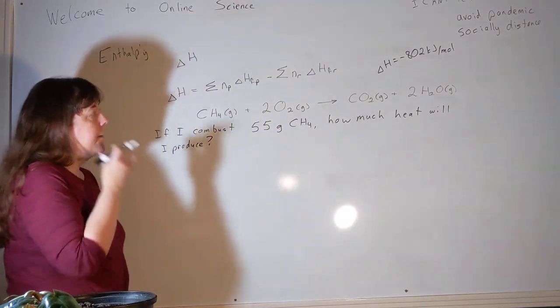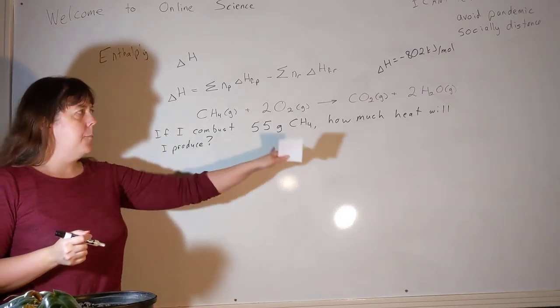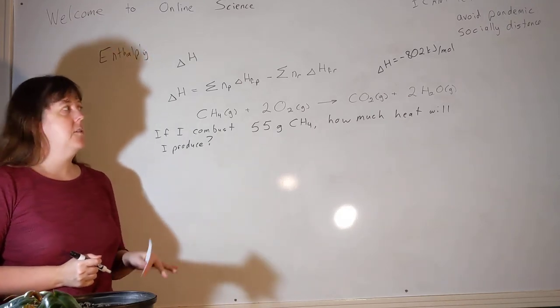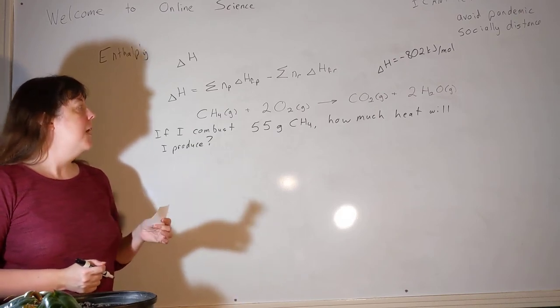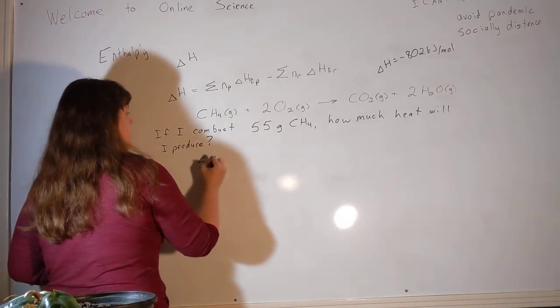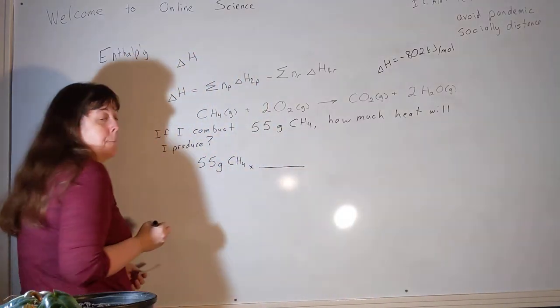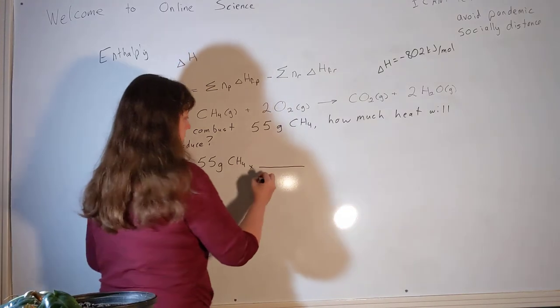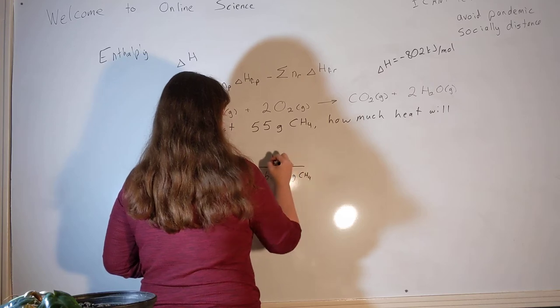Now I'm hoping the wording of that problem reminds you of something. I'm hoping what it reminds you of is a stoichiometry problem. If I combust this much of this, how much of this other thing will happen? Every stoichiometry problem we've worked so far has had two chemical substances. It turns out we can treat heat in much the same way that we treat the chemical substances when it comes to a stoichiometry problem. I'm just going to work this one and then we'll talk about how exactly I did it. I'm going to start with my 55 grams of methane. And the first thing I'm going to have to do if I'm given an amount in grams and a stoichiometry problem is convert it to moles. Well, I already found the molar mass of methane and it's 16.042 grams for every one mole.